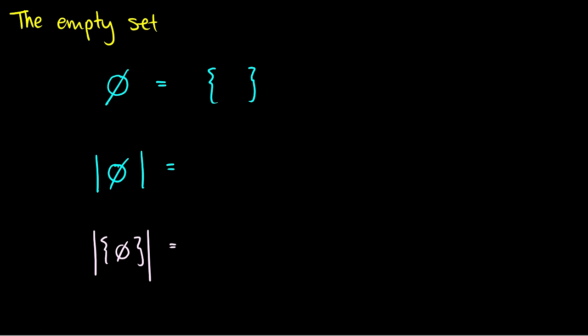Now there's one particularly interesting set that contains nothing in it — this is called the empty set, written with the ∅ symbol. If I write it with curly braces it would look like this: just a left curly brace and a right curly brace with nothing inside, because it's empty. What's the size of this set? Well, there's nothing in it, so the size of it is zero.